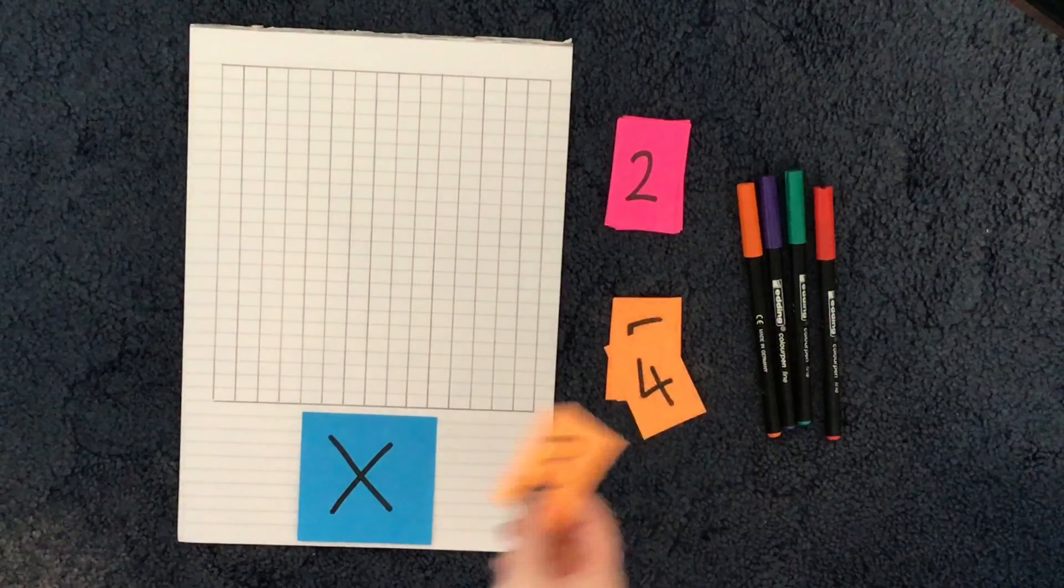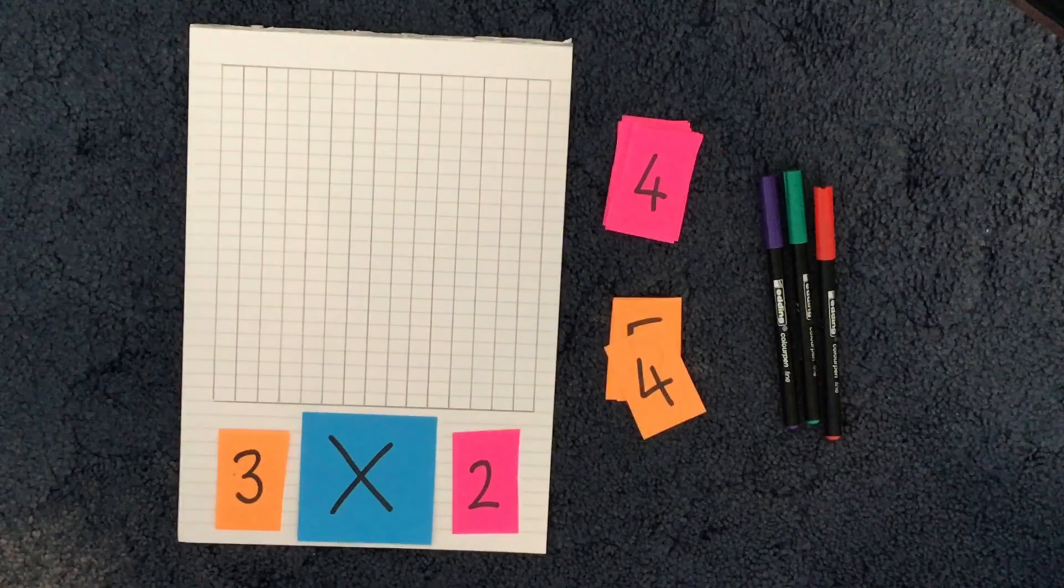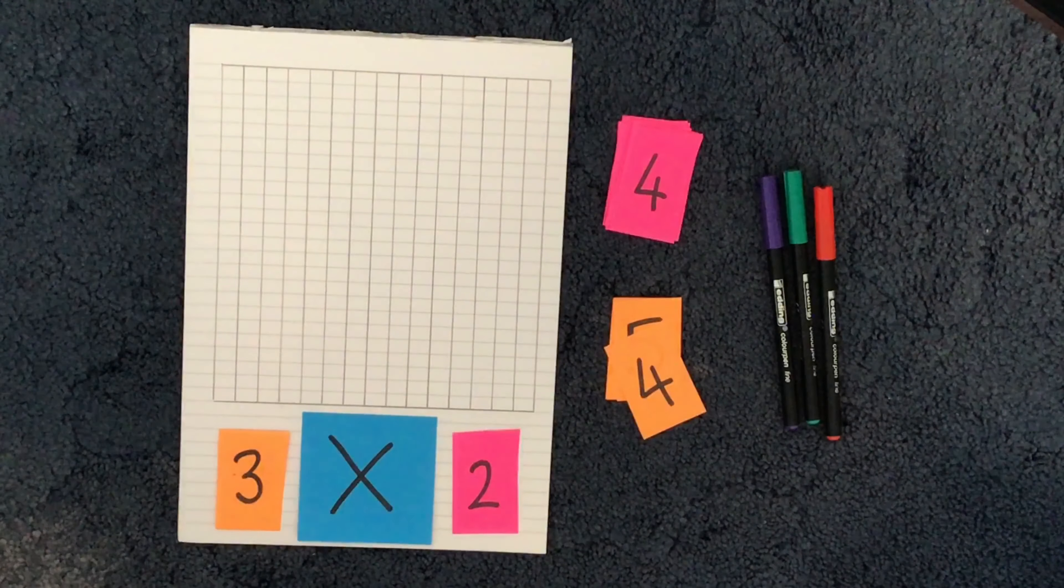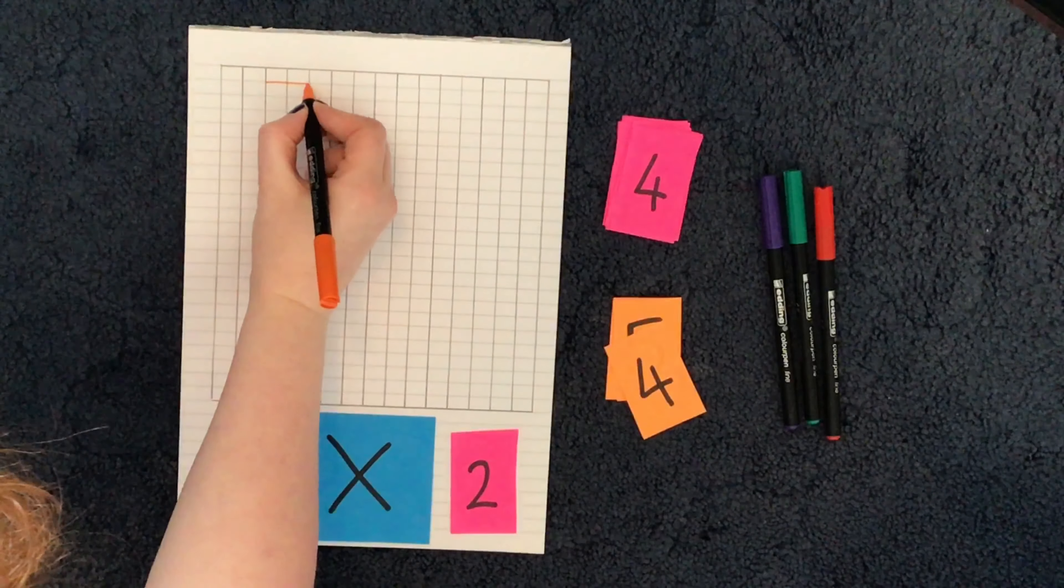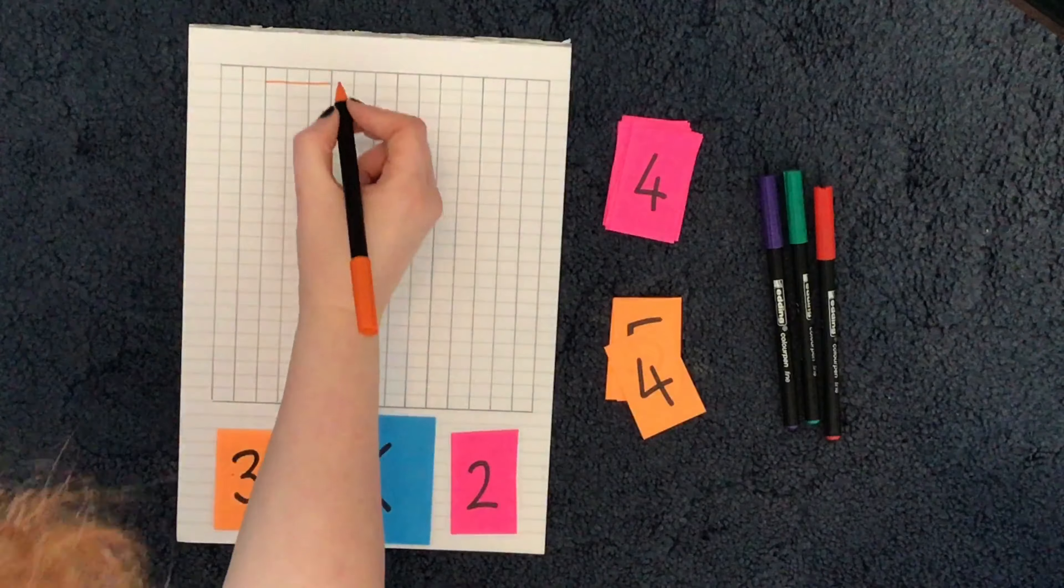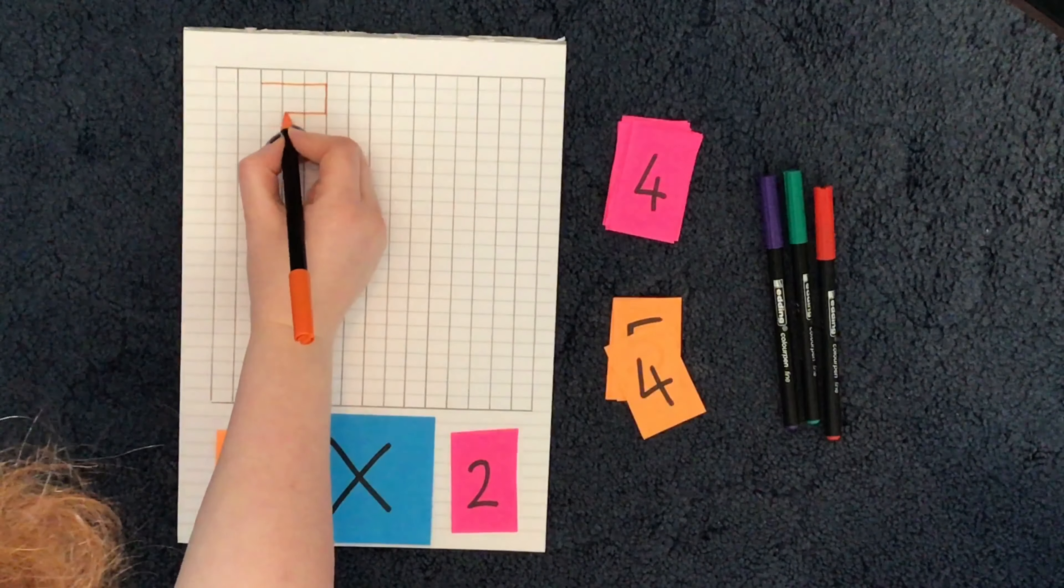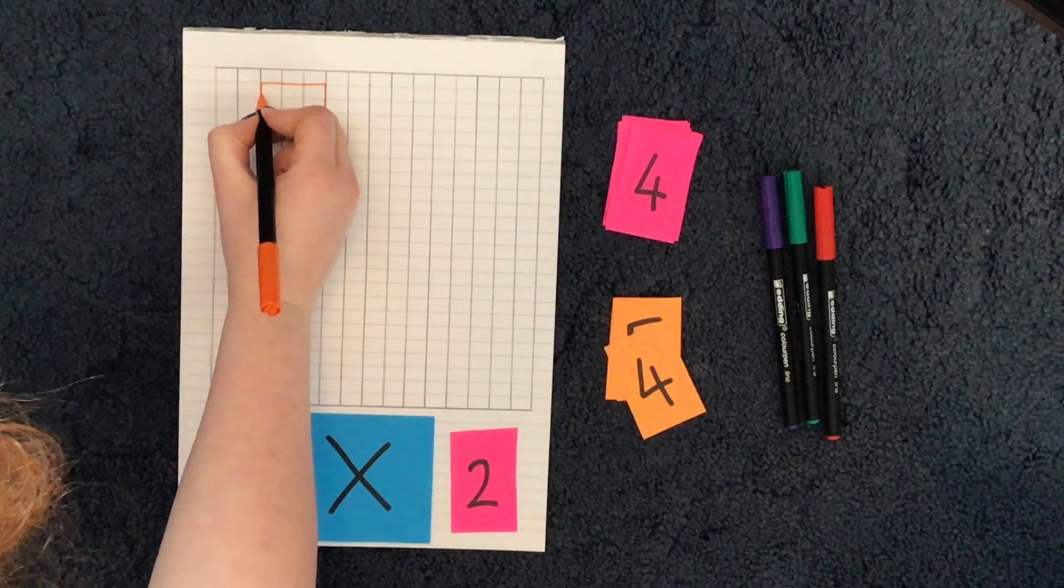So I'm going to do my first calculation: 3 times 2. Another way to say that is 3 multiplied by 2. You know that if you're timesing by 2, you're doubling, so 3 doubled. And the way that I'm going to set this out on my grid is by doing 1, 2, 3 along, and I know that I'm multiplying by 2 so I'm going to go down 2: 1, 2. So again I'm going to go along 3: 1, 2, 3, and then I need to join my shape up, 1, 2.